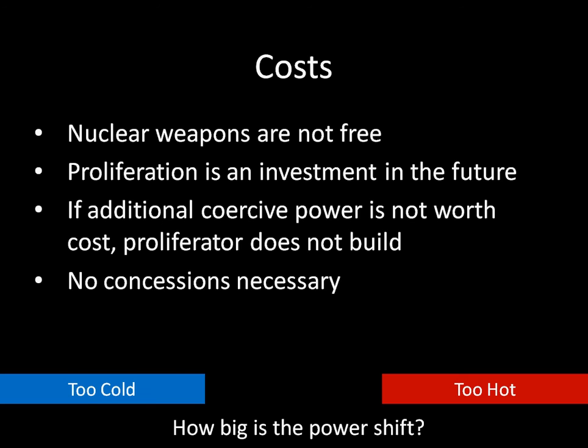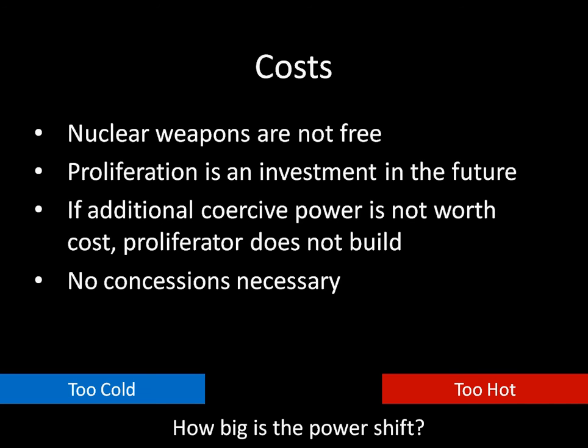If you've read Goldilocks and the Three Bears, you might think: we have too hot, too cold—the middle section must be just right. That's a situation where an opponent doesn't want to launch preventive war, but the potential proliferator finds the cost worth the investment. And even in these situations, we see a third reason why states might not want to develop nuclear weapons.